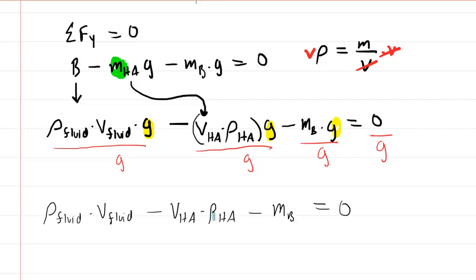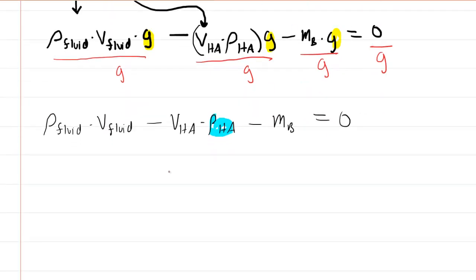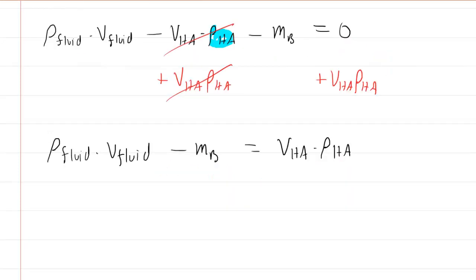Now recall the question wants us to find the density of the hot air inside the balloon. So we're going to try to solve for that. We will add the term V_ha ρ_ha to both sides of the equation. We could then divide both sides by the volume of hot air inside the balloon. That cancels it out on the right hand side, and we have solved for the density of the hot air. Let's clean this up a little bit. At this point it's just a matter of plugging in the known numbers.